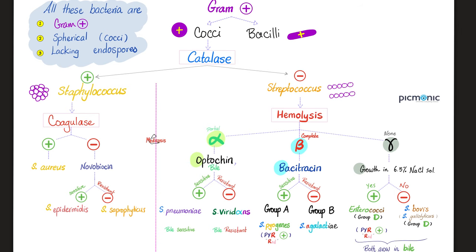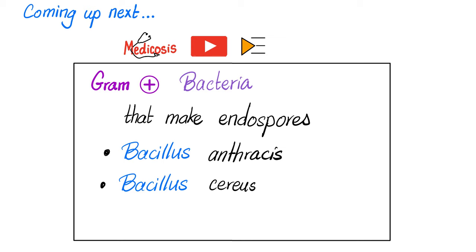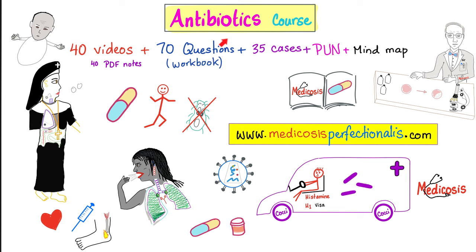If you want to be a great student, bring a piece of paper and try to draw everything from memory. In the next videos in this Microbiology and Infectious Diseases playlist, we'll start talking about Bacillus anthracis and Bacillus cereus, anthrax, and food poisoning.